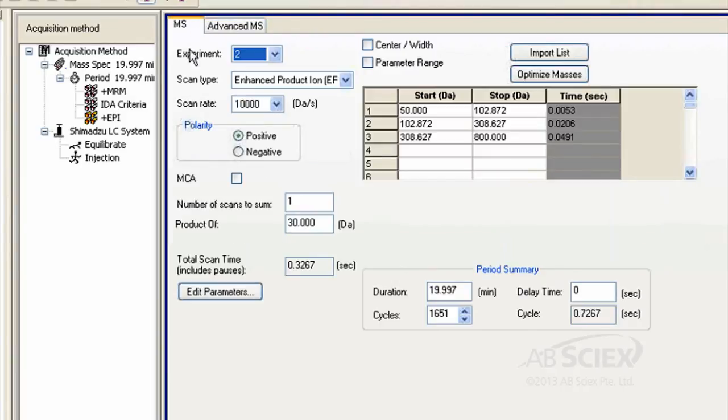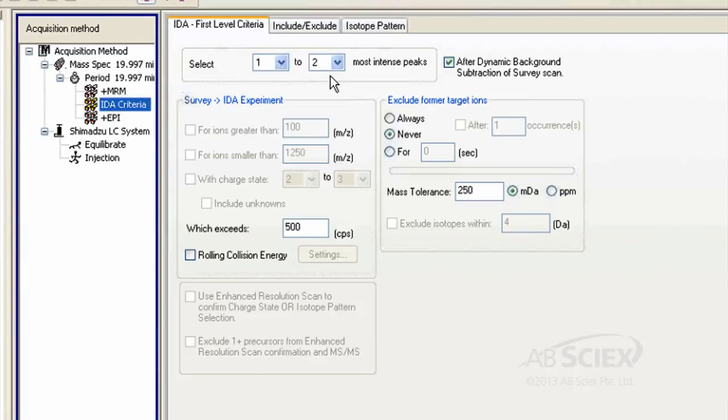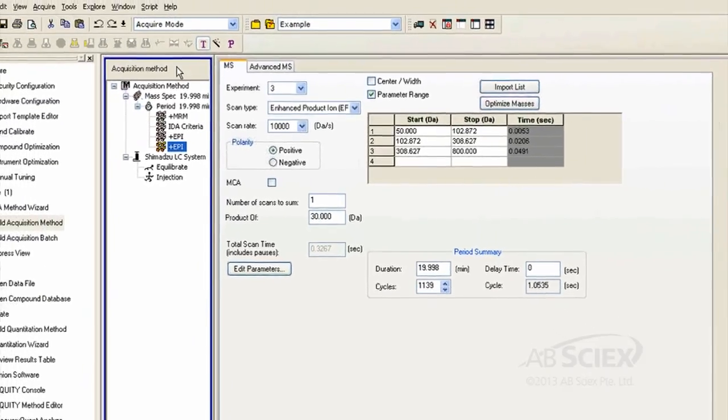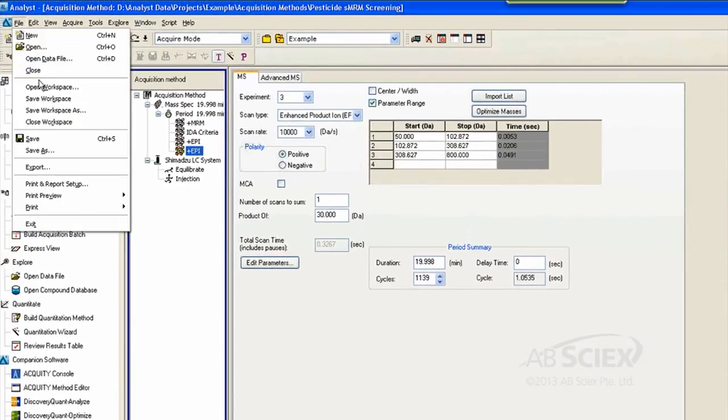Since we set up our IDA to monitor the two most intense peaks per cycle, we will need to duplicate the EPI experiment to cover both. To do this, right-click on your EPI experiment and select Copy this experiment. Finally, save your method and you're ready to go. It's that simple.